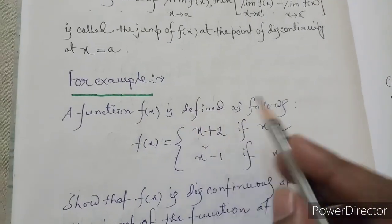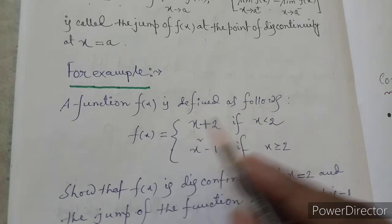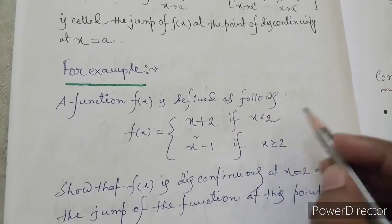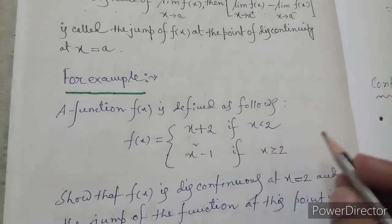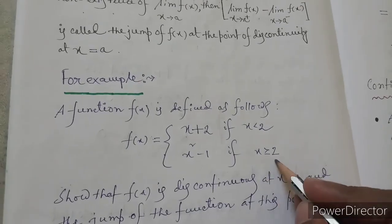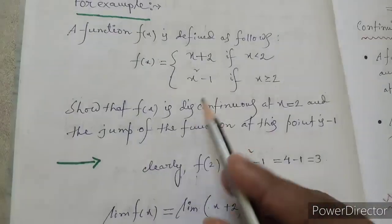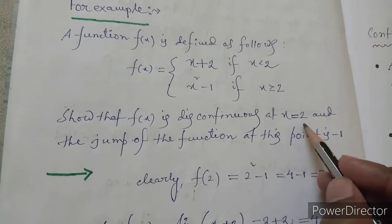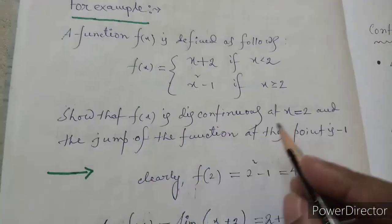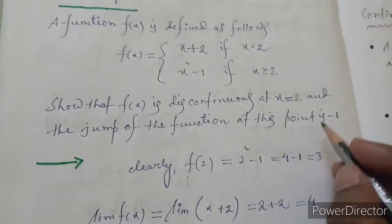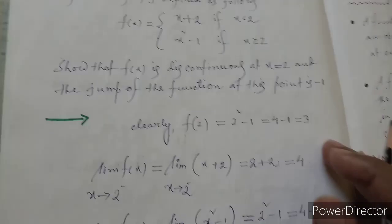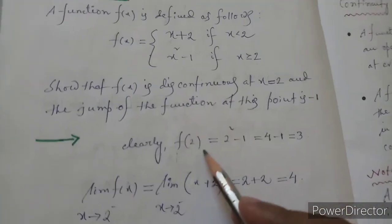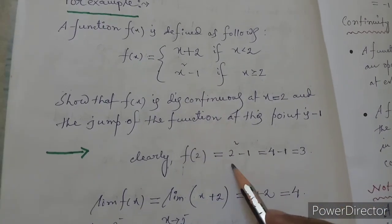For example, a function f(x) is defined as follows: f(x) equals x plus 2 if x is less than 2, and x squared minus 1 if x is greater than or equal to 2. Show that f(x) is discontinuous at x equal to 2, and the jump of the function at this point is minus 1.